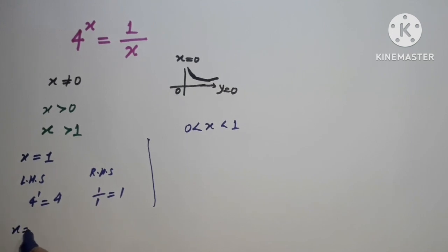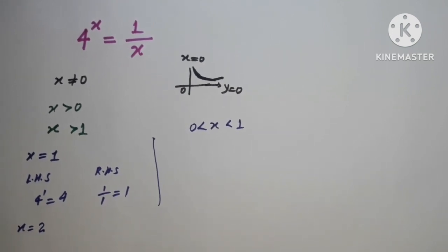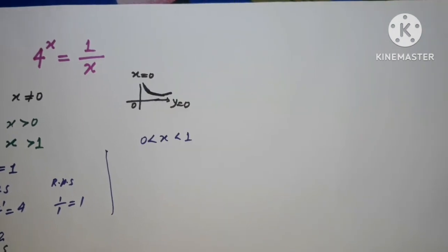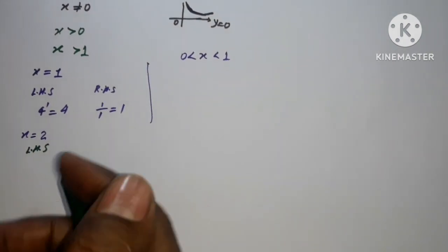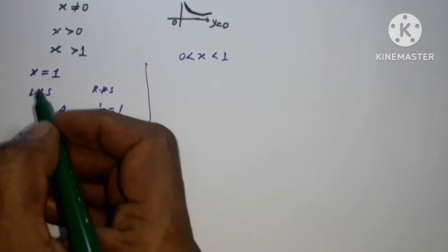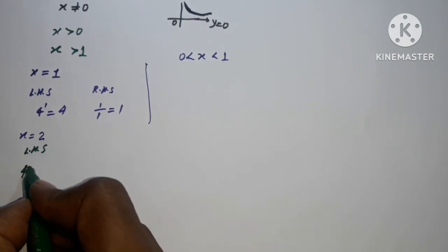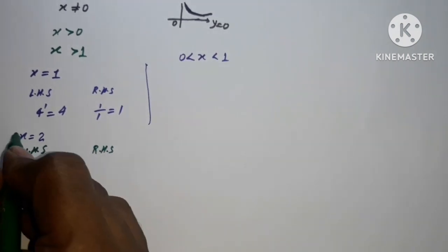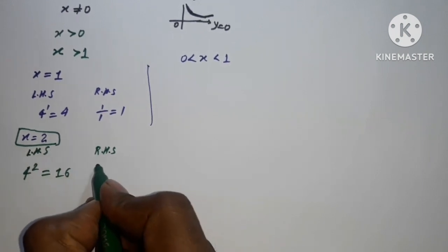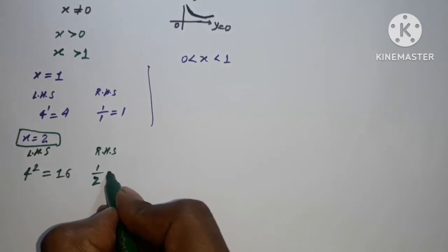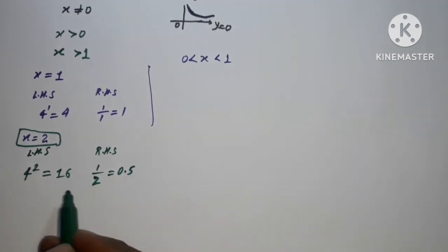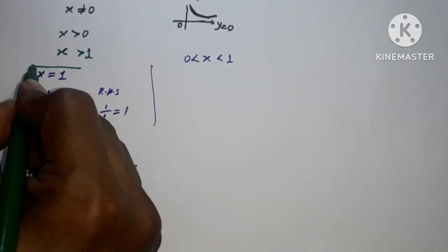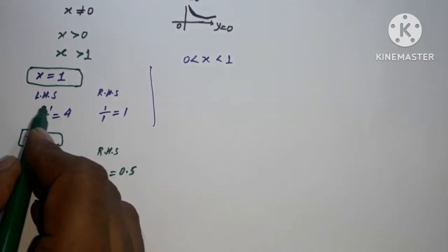If x is equal to 2, the LHS term is 4 to the power 2, which is 16. On the RHS side, the value for x equal to 2 is 1 upon 2, which is 0.5. So LHS and RHS are not equal for x equal to 2 either.